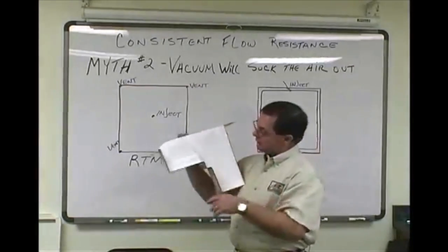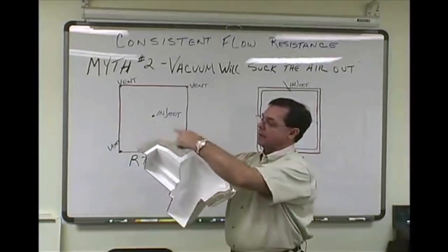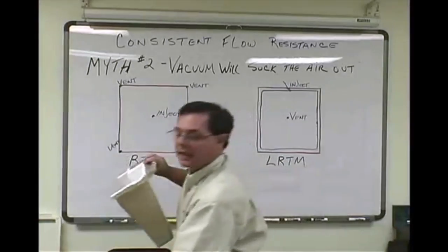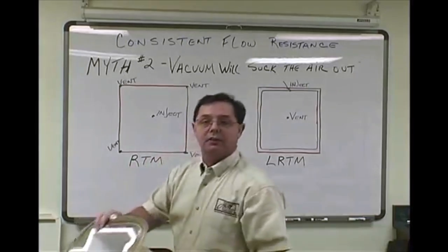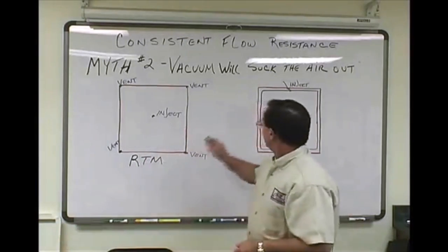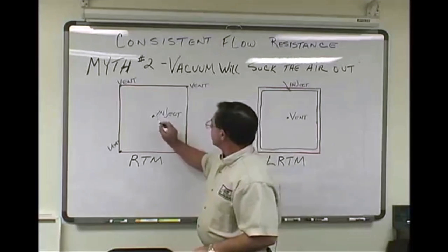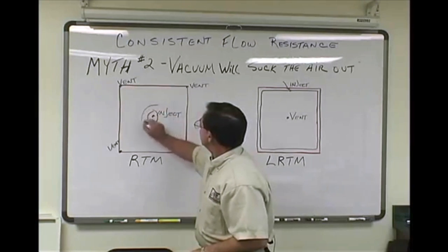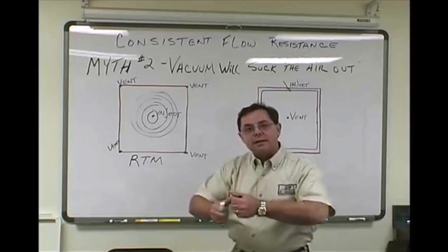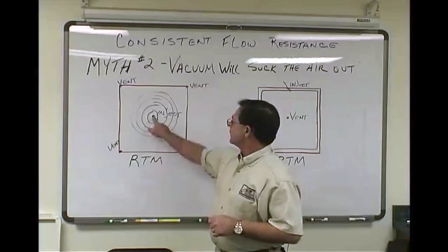So what we would do is we would inject in the center and we would exit at the four outer perimeter corners. Very typical. Someone said, 'John, we've got this box, where are we going to inject?' I'd say, 'We inject at the very bottom.' In this case, we would have injected straight down here and we put a vent here, here, and in the other two corners. Would have been very standard. And we did it that way for 20-some years until RTM light came out.